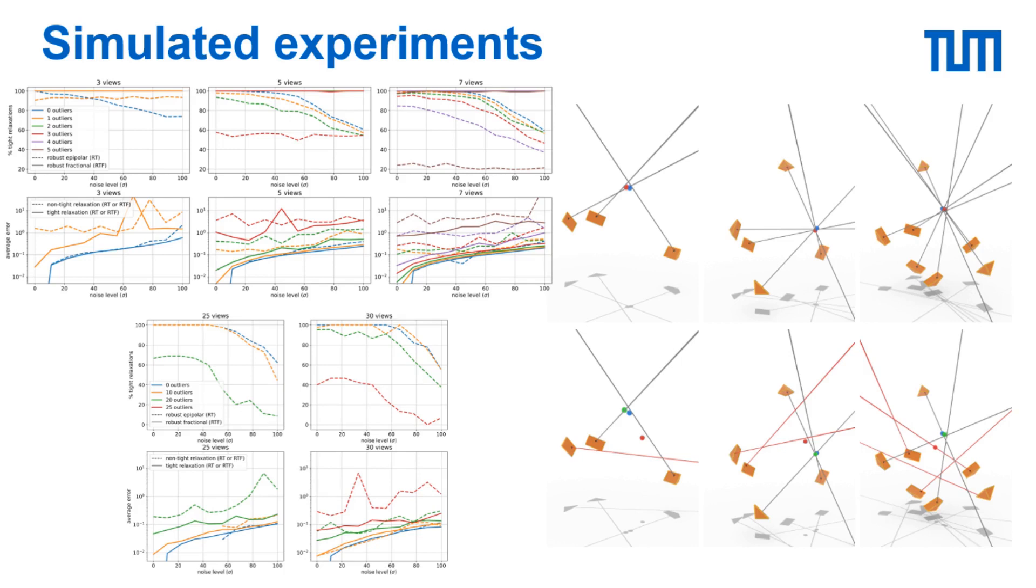On the left we show the percentage of cases where each relaxation is tight along with the resulting estimation error. Note that both methods work well up to a certain noise threshold which depends on the number of views and outliers. But after that the epipolar method degrades in performance. In contrast the fractional method remains tight in almost all cases.